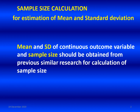For sample size calculation for estimation of mean, we are estimating the mean of an outcome variable — a continuous variable. For this calculation, mean, standard deviation, and sample size of the continuous outcome variable should be obtained from previous research. You have to do a literature search and find a previous research which shows mean, standard deviation, and sample size. Those values are required for calculation of sample size.